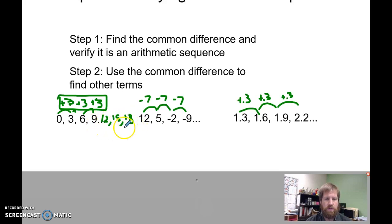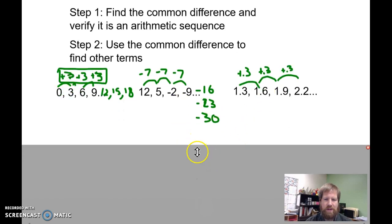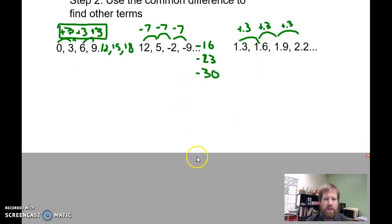Same thing over here. Negative nine minus seven is going to be negative sixteen, and then negative twenty-three, and then negative thirty.